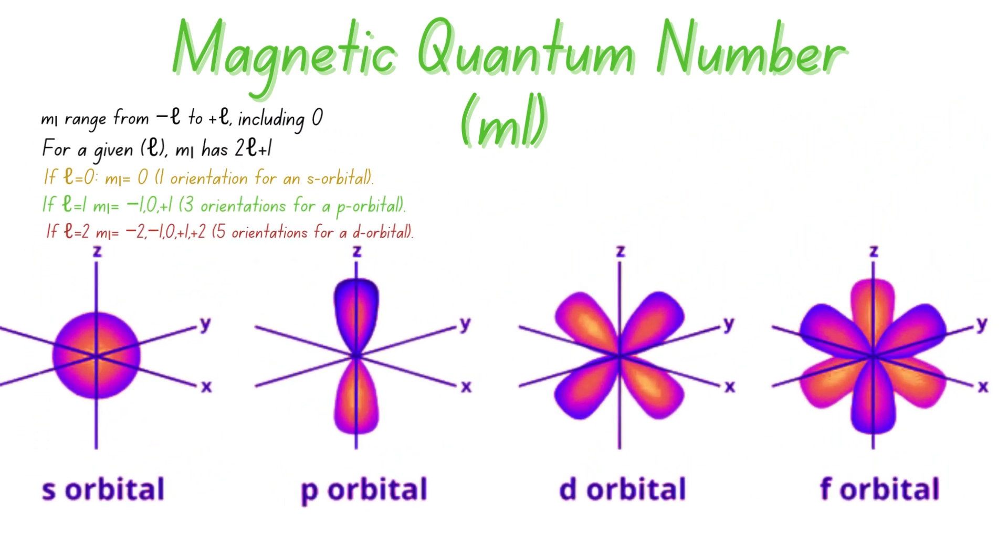This tells us the specific orientation of the orbital in three-dimensional space, usually represented as x, y, and z axis. For example, a p orbital, which means that l is equal to one, has three orientations, often labeled as px, py, and pz. So in essence, the magnetic quantum number ml specifies the direction an orbital points, adding more details to the electron's address within the atom.